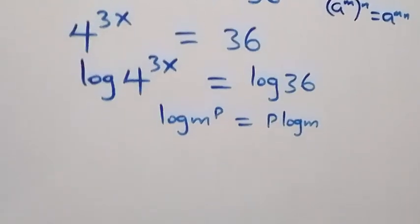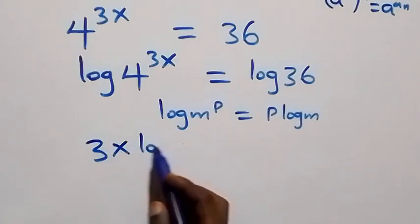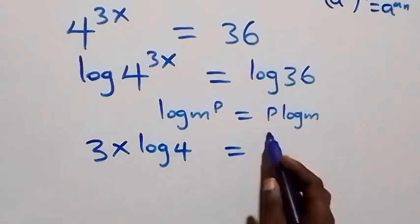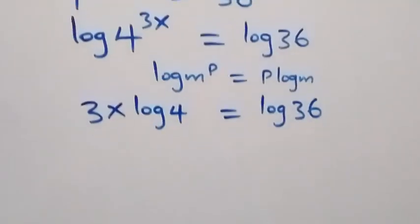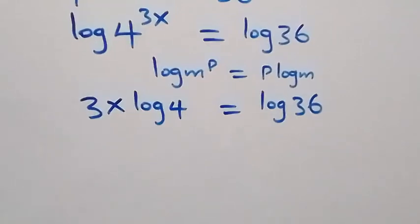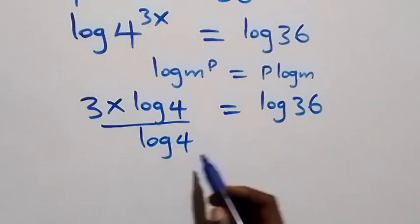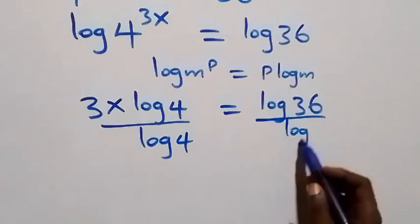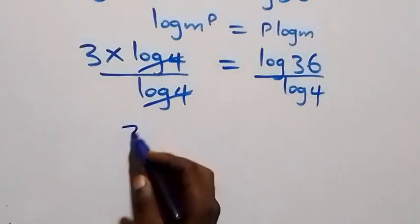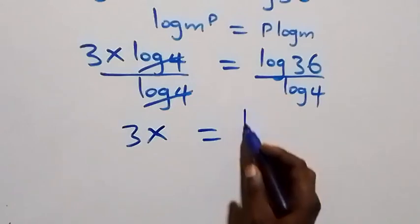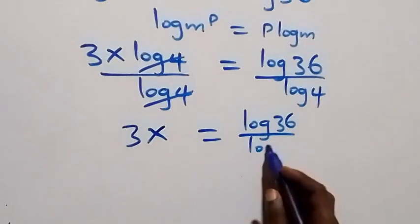The power here is 3x, so what we have becomes 3x·log 4 equals log 36. Next, we divide both sides by log 4. The log 4 on the left cancels, and we have 3x equals log 36 over log 4.